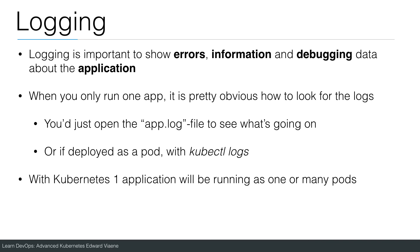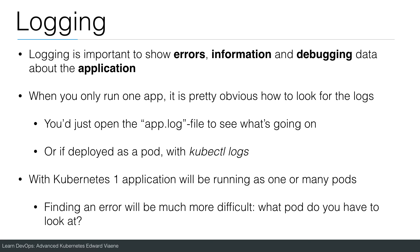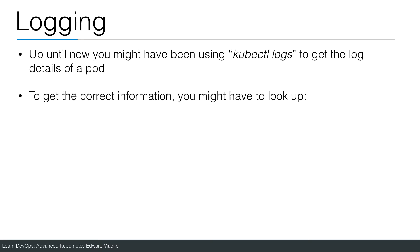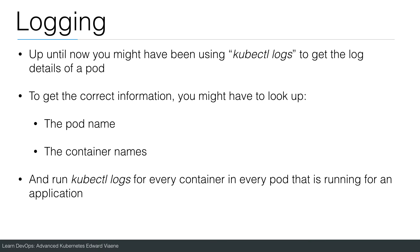With Kubernetes, one application will be running as one or many pods, so finding an error will be much more difficult. What pod do you have to look at? Up until now you might have been using kubectl logs to get the log details of a pod. To get the correct information you might have to look up the pod name first, then the container name, and then run kubectl logs for every container in every pod that is running for an application.